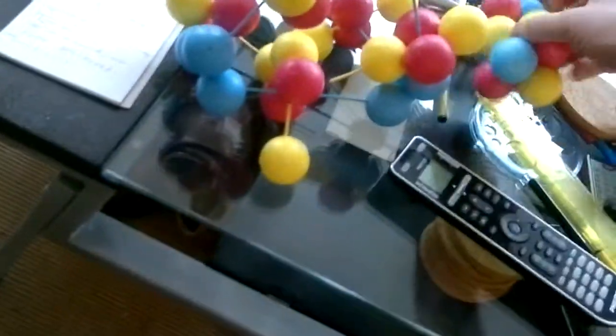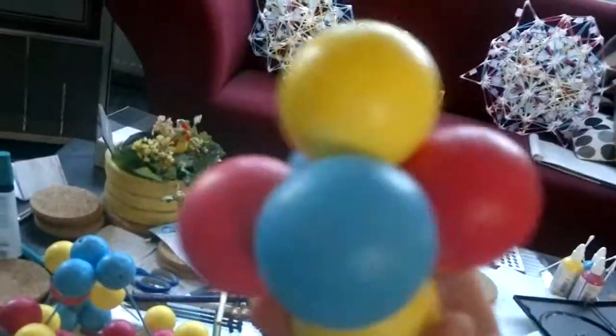Argon is made out of different nucleons, two kinds. Of course nothing is black and white, but we have these protons and these neutrons. Every Q-tip represents one of these things. You see that every nucleon is made out of three quarks.